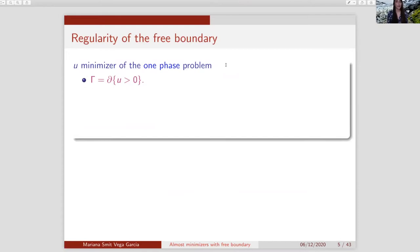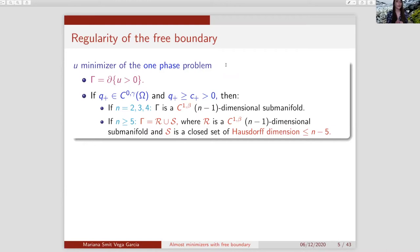Regarding the free boundary, let's talk about the one-phase first. The free boundary gamma is the boundary of the positivity set. If q-plus is Hölder and bounded away from zero, then for dimensions two, three, and four, the free boundary is C^{1,beta} — the graph of a C^{1,beta} function up to rotation — so there are no singularities. Some of you may be drawing parallels to minimal surfaces, which is appropriate.